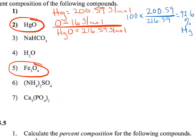For the oxygen we'll do the same thing. We'll take a hundred times 16 divided by 216.59 and that'll give us 7.4 percent oxygen. So your answers for that one should be 92.6 percent mercury and 7.4 percent oxygen.